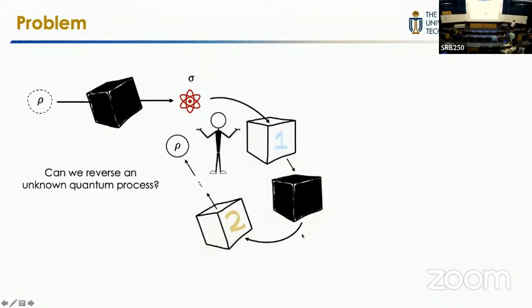What you can do is just by querying this black box again for many times and also performing some other operations. If possible, then this whole part performs like the inverse of this quantum channel. I think for people who first see this problem, they think it is quite amazing — how could you just perform this operation again and again for many times, and then it suddenly becomes the inverse of this process?